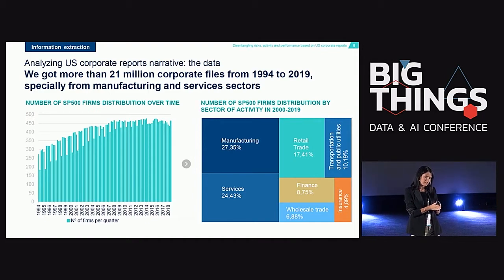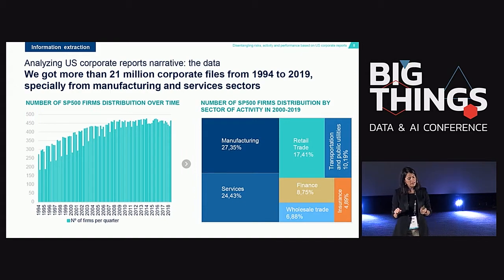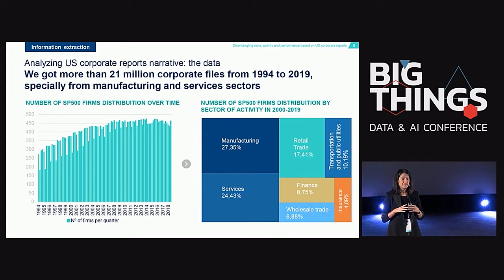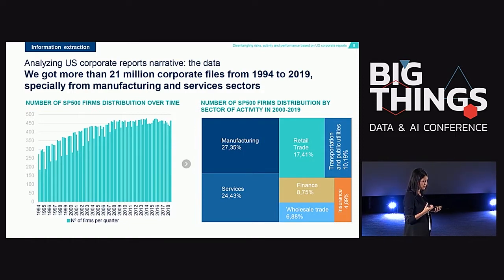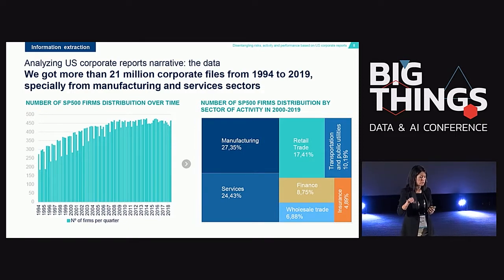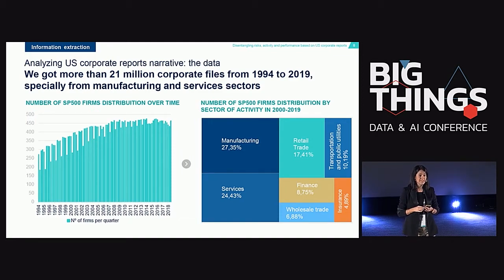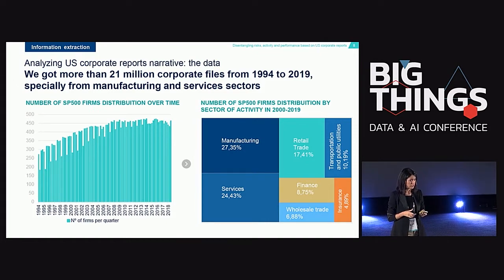We are going to focus on this sample of firms. In this graph you can see the distribution of all these firms by sector of activity. The biggest firms belong to manufacturing and services, comprising more than 50% of the total sample, followed by retail trade and transportation.